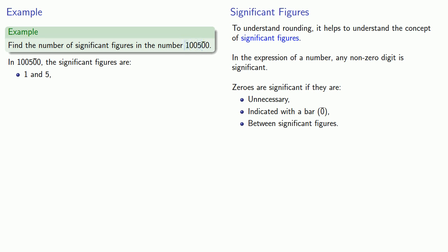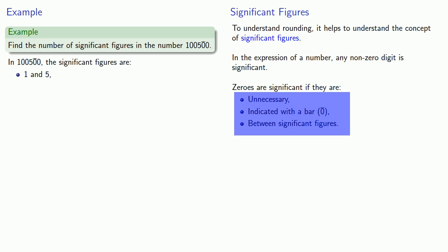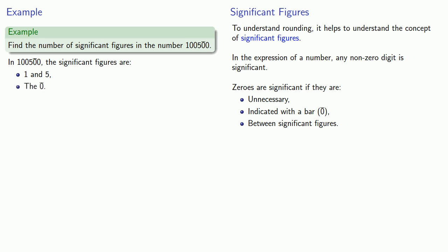Now we also have a couple of zeros here. Remember, zeros are significant if they are unnecessary, indicated with a bar, or between significant figures. We see that we do have a zero indicated with a bar, so it's significant. And the zeros between significant figures are also going to be significant — so the two zeros between the 1 and the 5 must also be significant.